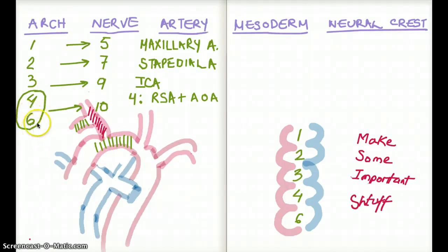Moving on to brachial arch 6, so for 6 we have, 6 is going to give rise to pulmonary arteries and ductus arteriosus. So you see that this is the pulmonary artery and this is the ductus arteriosus. So this region is going to be supplied by brachial arch 6. Okay, so now let's take a look here.